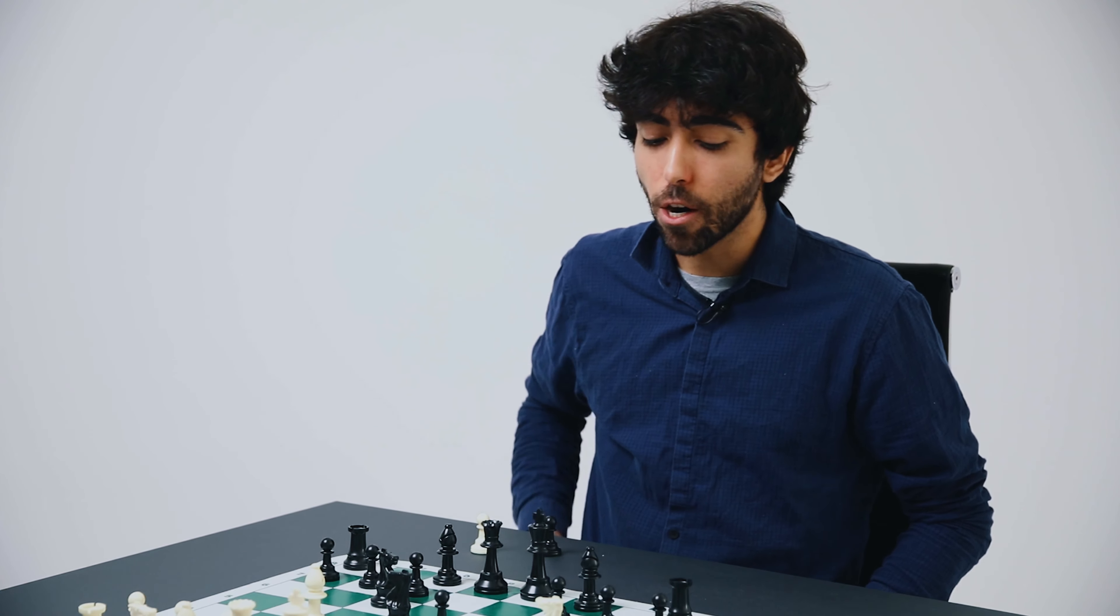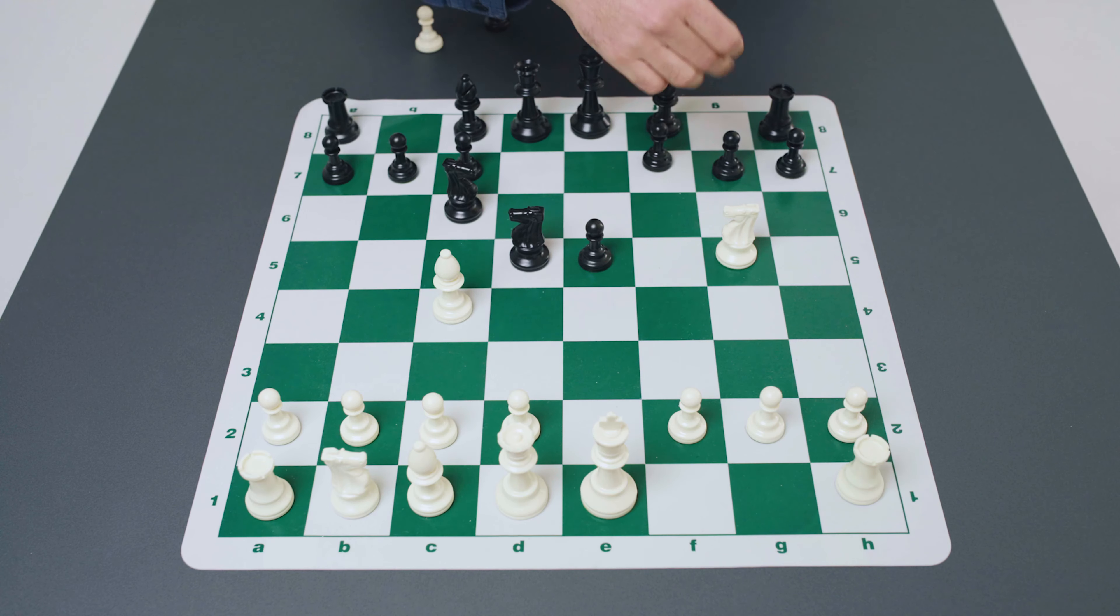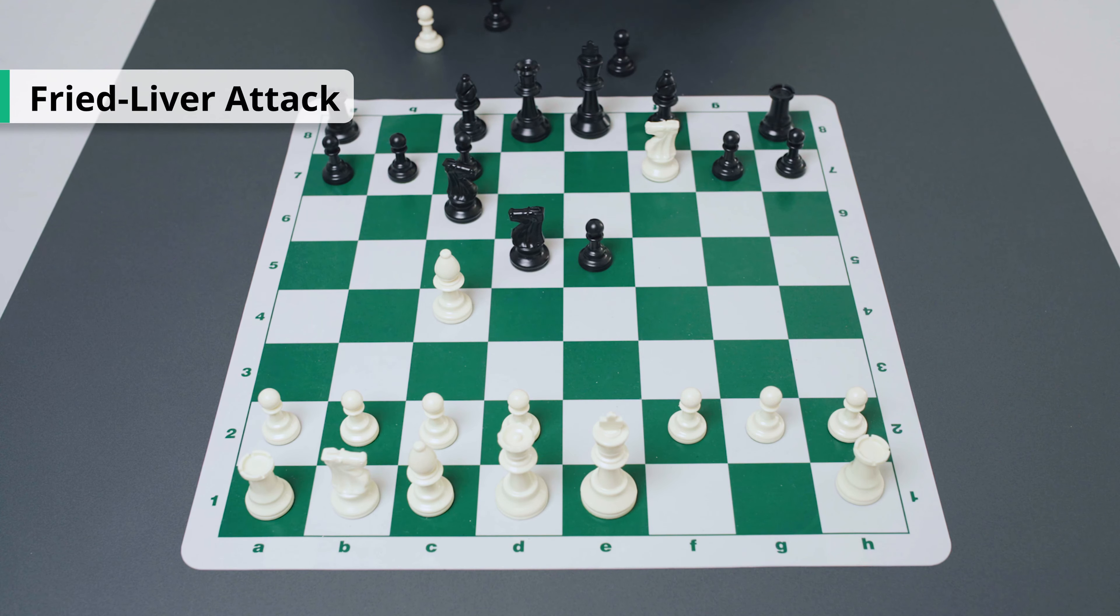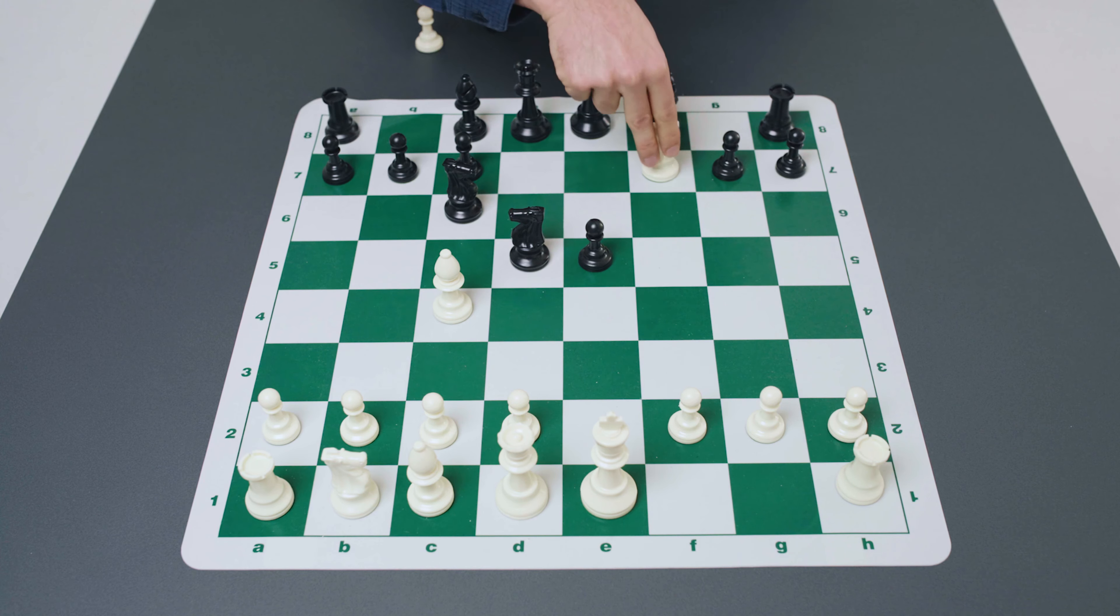This covers all of the possibilities, all of the major possibilities for white after black's response of bishop to c5. So that is the classical line.